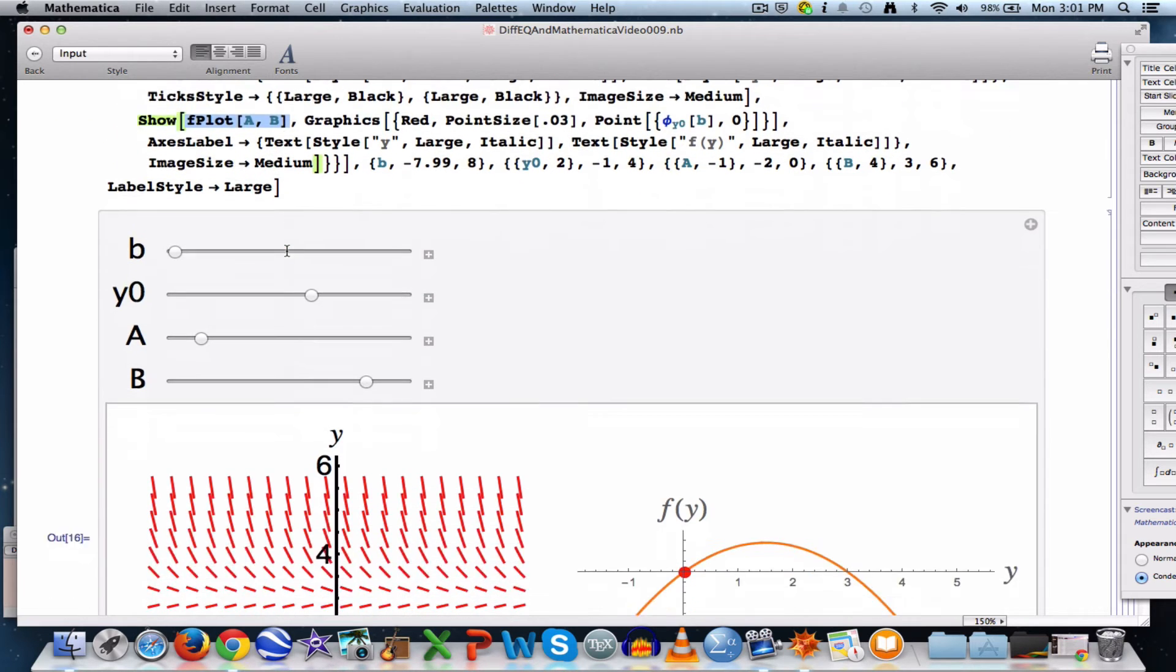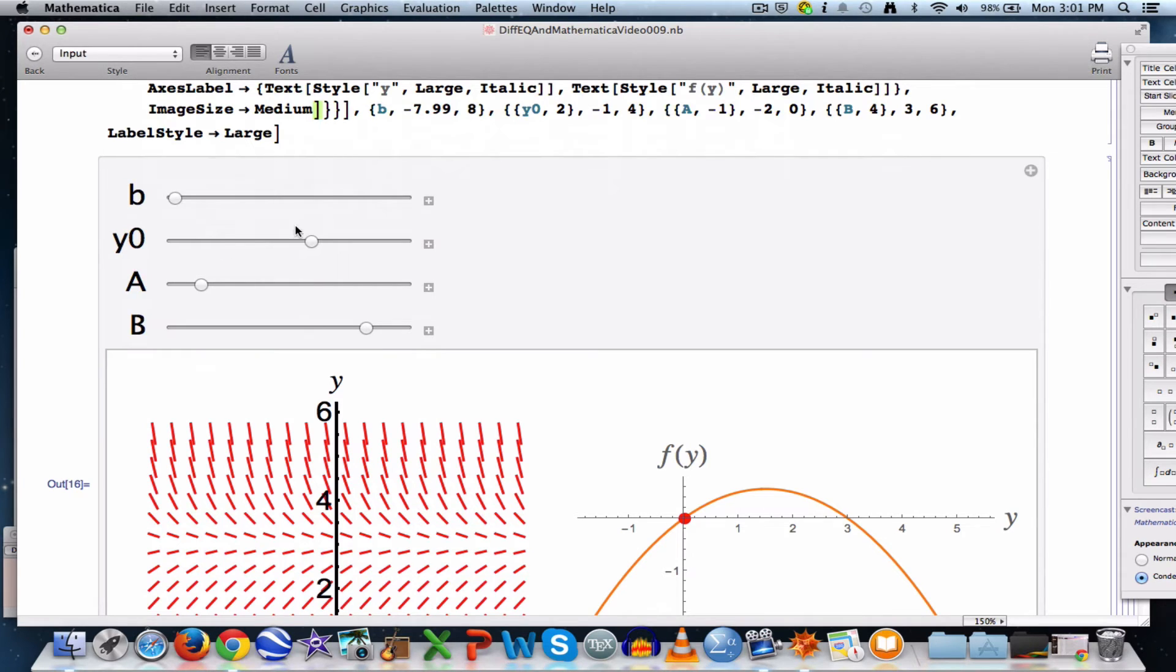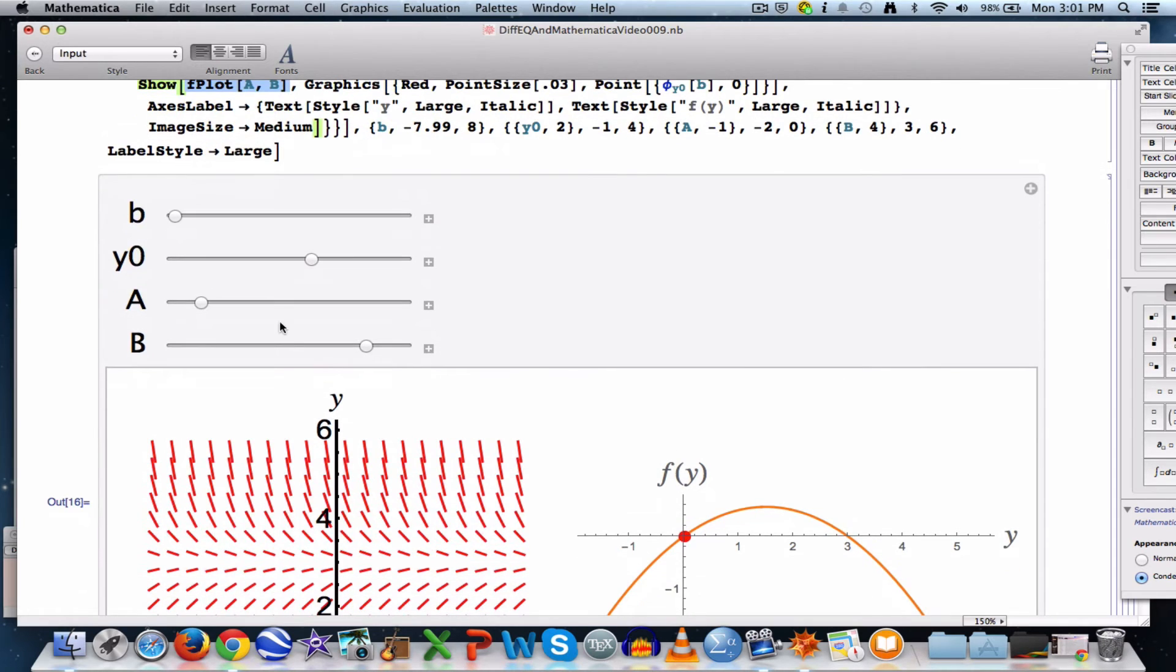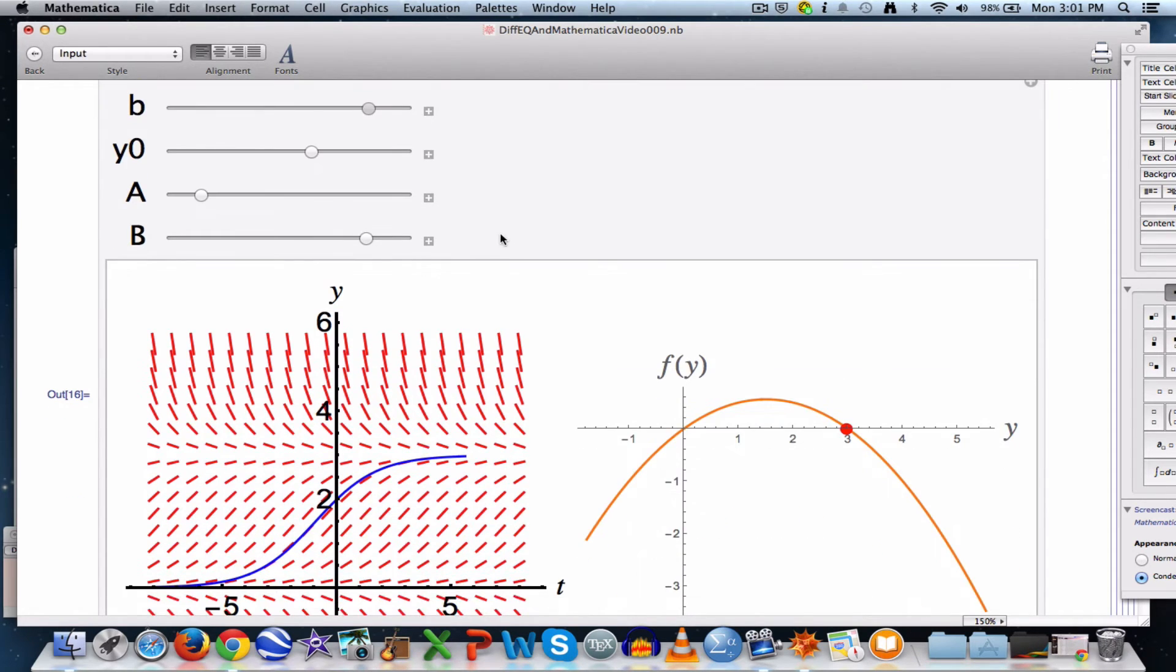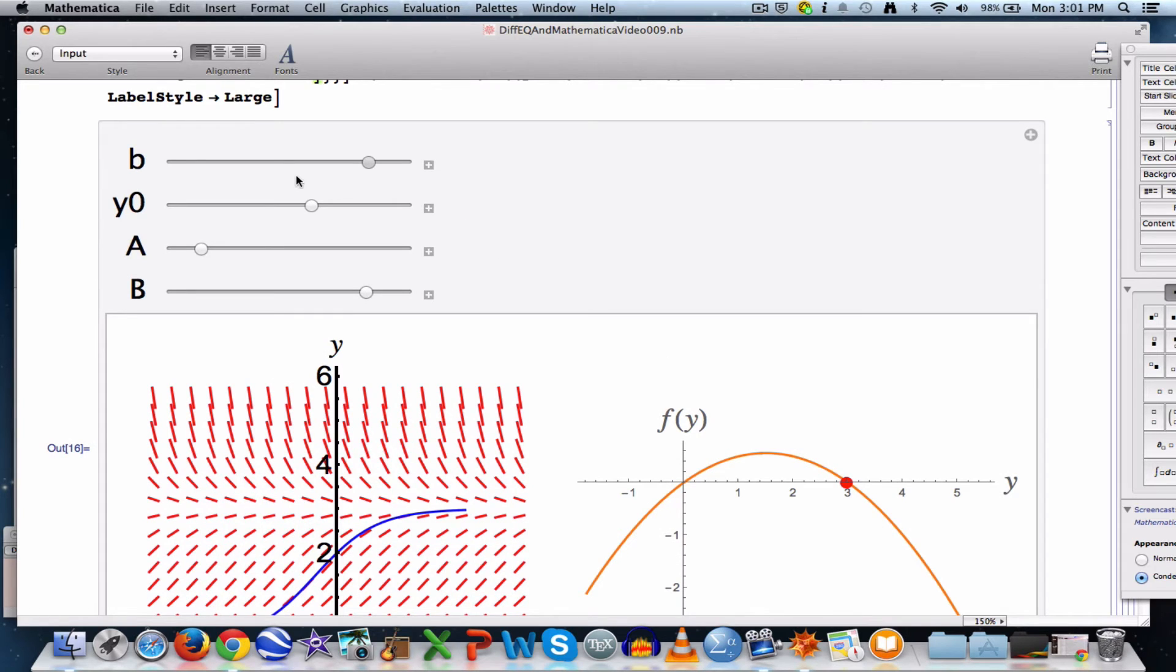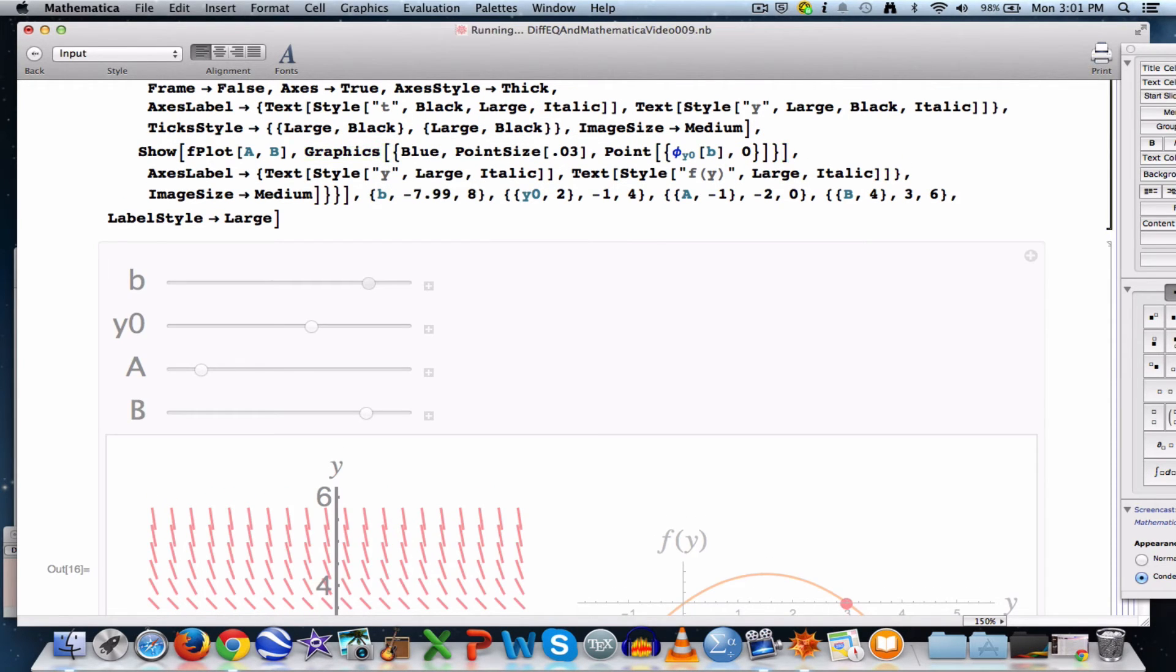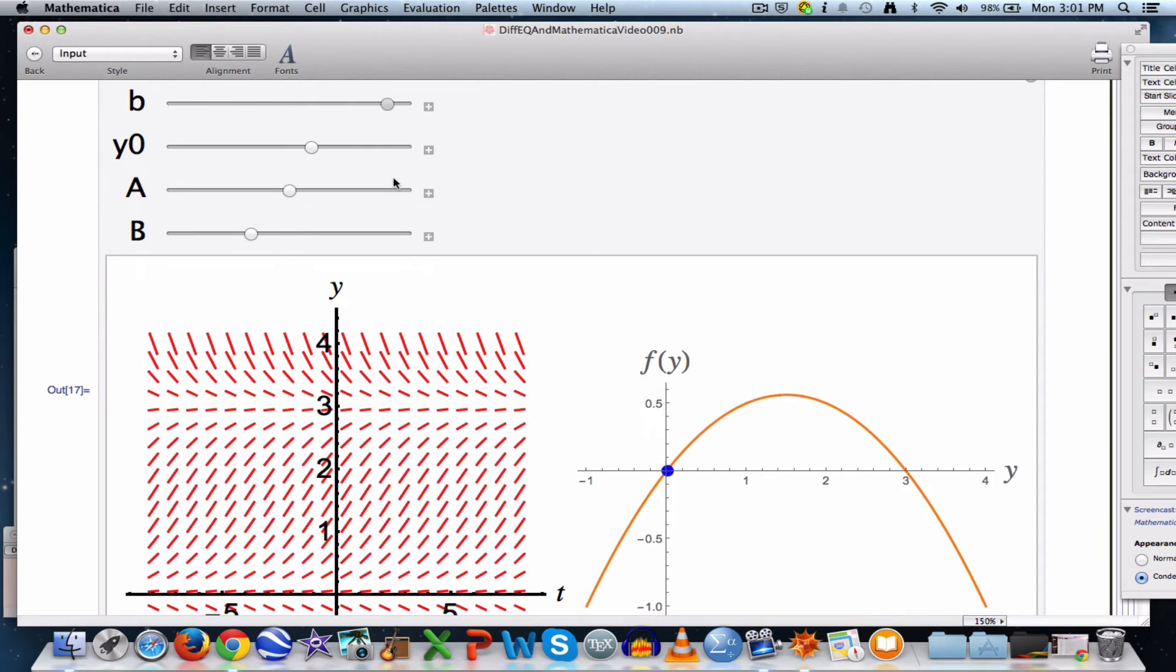Let's spend the rest of the time talking about this idea of this phase line and also some technical difficulties that come up with this code. One thing I think I should probably do here—let me let B go forward in time—I think I should have made this red dot a blue dot. Let's go back up here. Graphics and Point was what made this dot over here. And I made it red. I probably should have made it blue. And the reason is because the solution graph I made blue on the left.